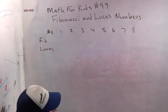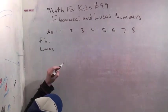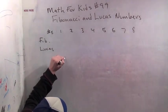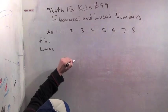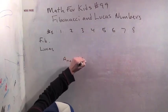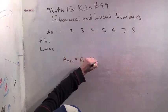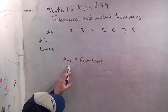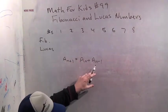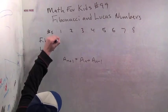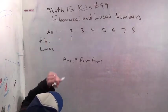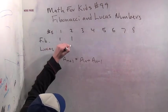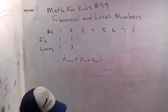and then the Lucas numbers. Now both of them go by the same pattern that the number a sub n plus 1 equals a sub n plus a sub n minus 1. So in other words, a sub 3 equals a sub 2 plus a sub 1. So we just have to know where we start. Fibonacci numbers start 1, 1. Lucas numbers start 1, 3.